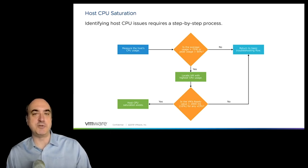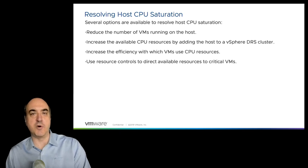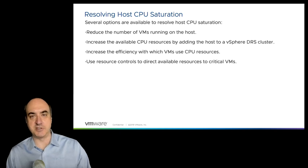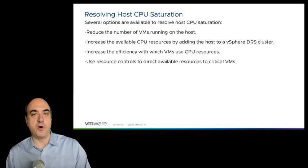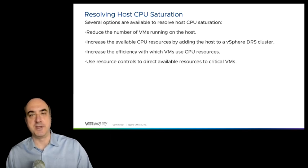Basically, find the VM with the high CPU usage, find any VMs impacted by CPU ready, and you have CPU saturation at the host level. Resolving host CPU saturation is your classic decision: you have a workload consuming more resources than you have. You can reduce the number of VMs running on the host to reduce the workload, or increase resources by adding hardware. A simple approach in vSphere is vMotion — find another host for your VMs that has free CPU resources.